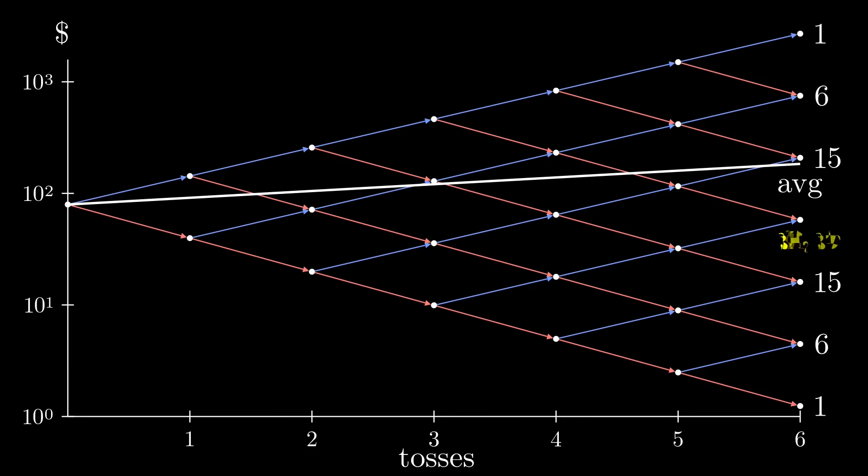Same applies to the other half. Half heads, half tails occurs the most, 20 times. It's the median since it's in the center and the mode since it's most common.